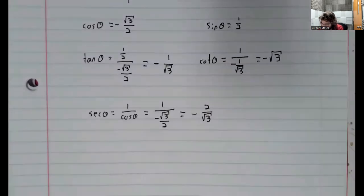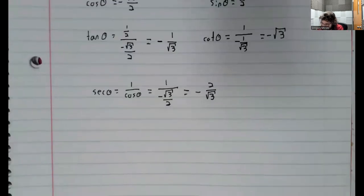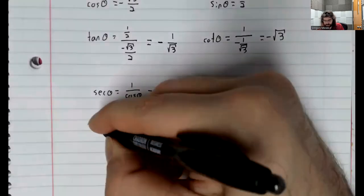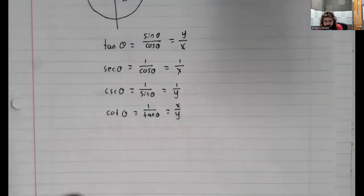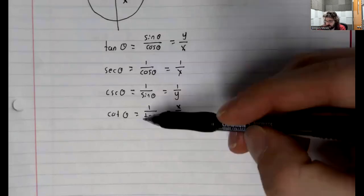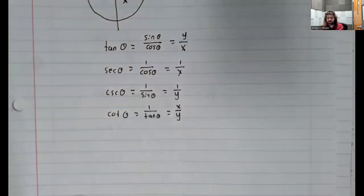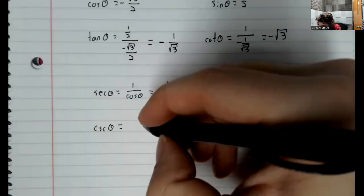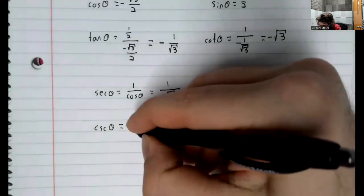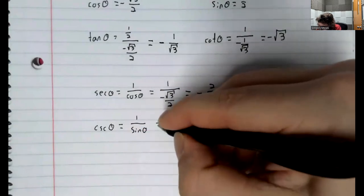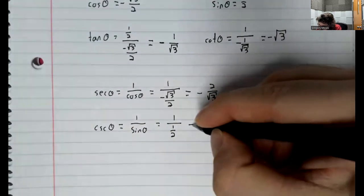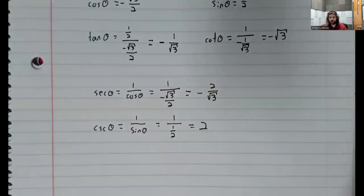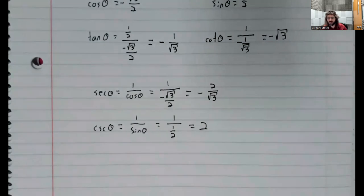And the cosecant of theta - again, I know I'm going a little fast, but I'm just plugging and playing with these four statements. The cosecant is 1 over the sine. The sine is 1 half. 1 over 1 half is 2.